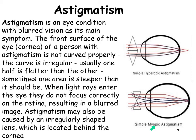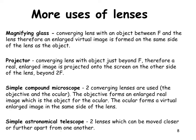You don't need to know the different types of astigmatism — hyperopic and myopic astigmatism. You just need to know that astigmatism is caused by the cornea being the wrong shape.